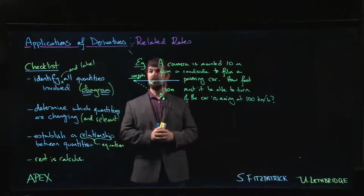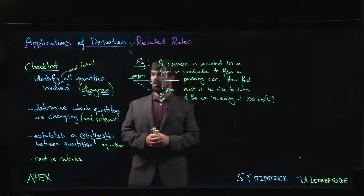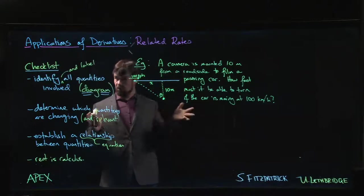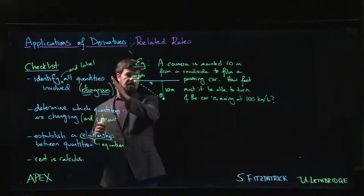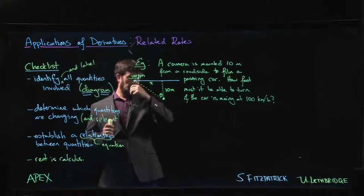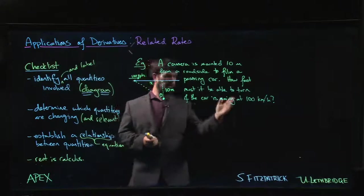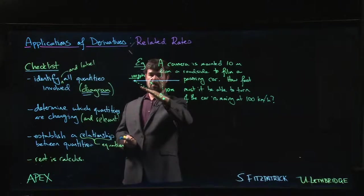All right, so here's another related rates problem involving traveling cars. Maybe we're shooting a car commercial, so we've got a camera mounted on the side of the road and we want to film this car as it drives past. We want to figure out how fast this camera needs to be able to turn to track the car as it goes by.